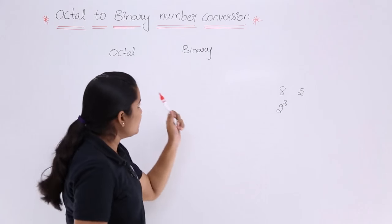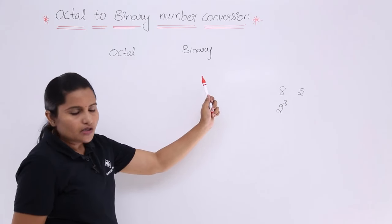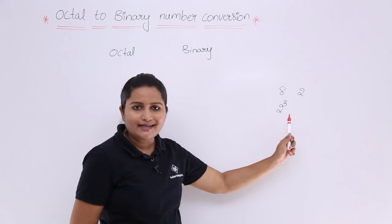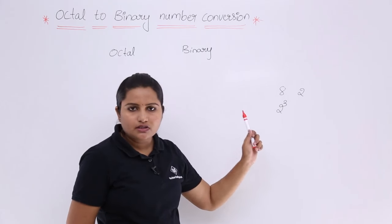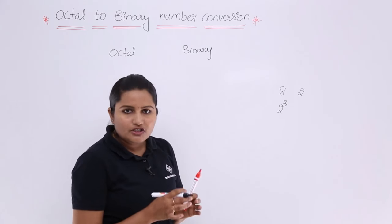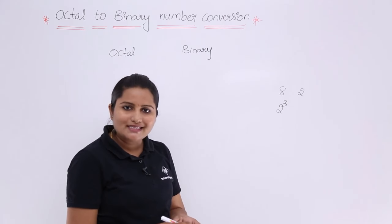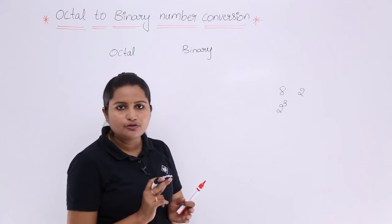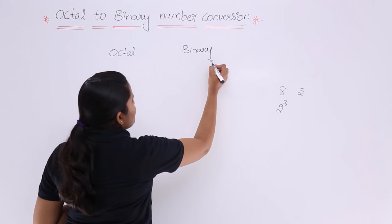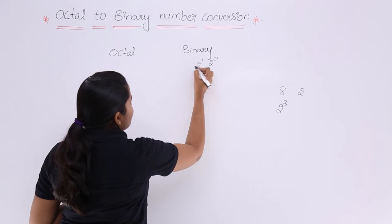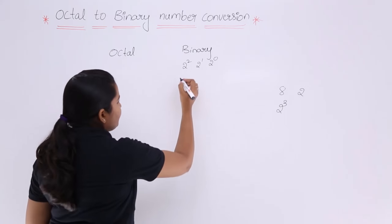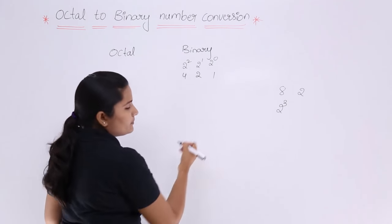When writing octal to binary, the number of 2-powers you consider must be less than 2 cubed, and they must be positive powers. That means only 3 powers of 2 will come: 2 power 0, 2 power 1, and 2 squared — that means 4, 2, and 1.